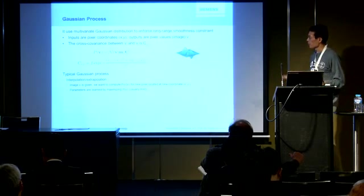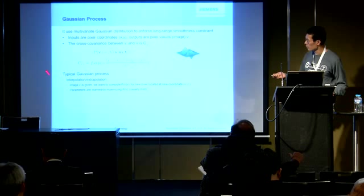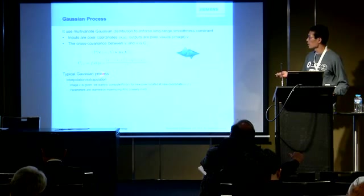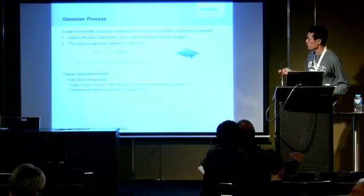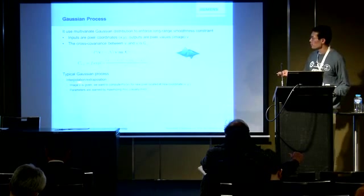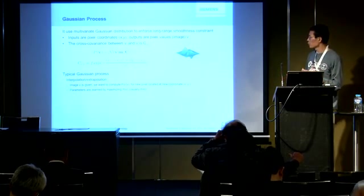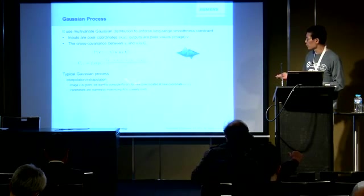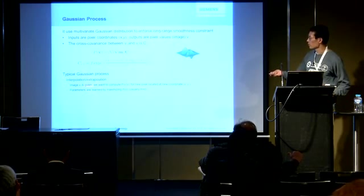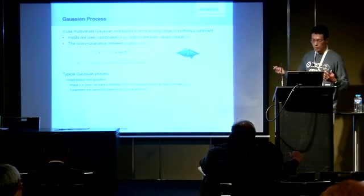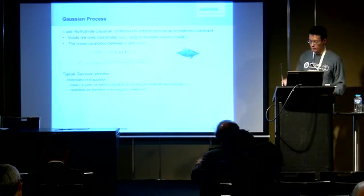So what's the difference here? There are so many Gaussian process applications. Typically, when people in the machine learning area use Gaussian process, they tackle an interpolation or extrapolation problem — meaning that the image v is given, and they try to predict the pixel value for a new pixel v-star, which they call the predictive distribution. They then learn the Gaussian process parameters by maximum likelihood estimation. That's typically done in the machine learning domain.